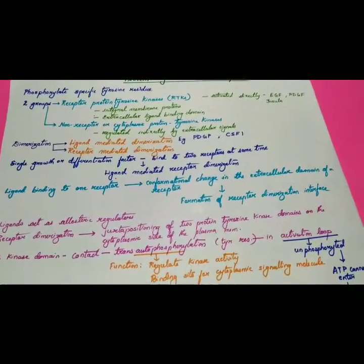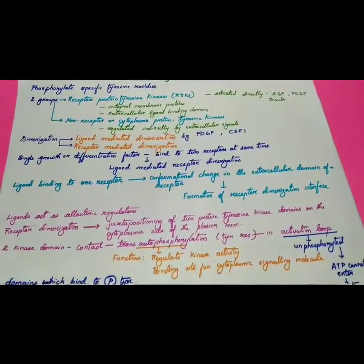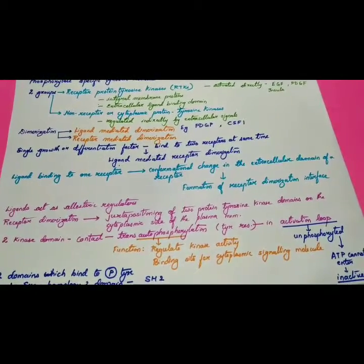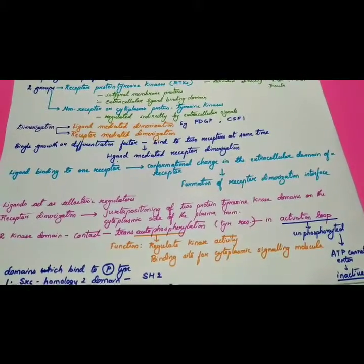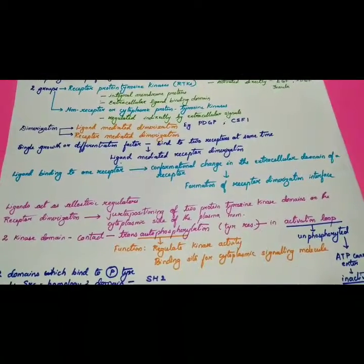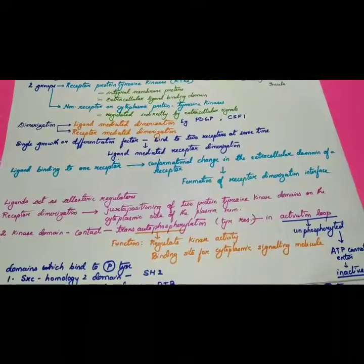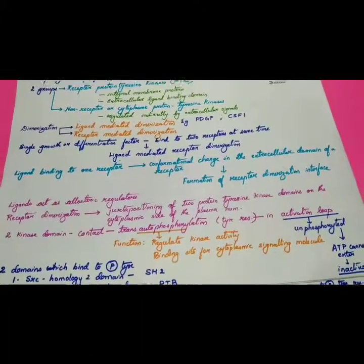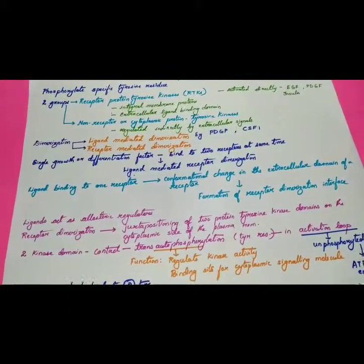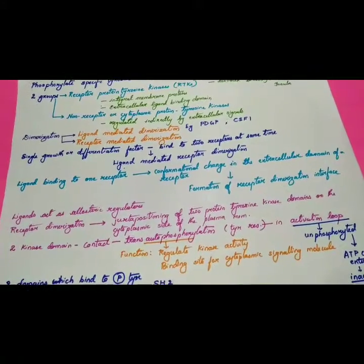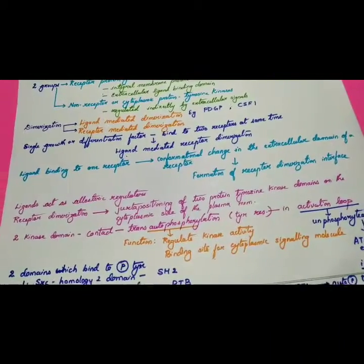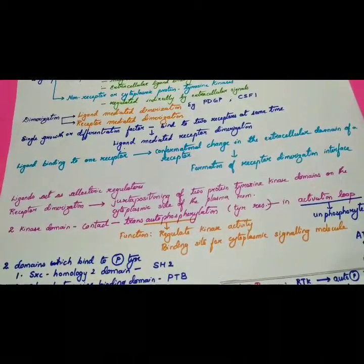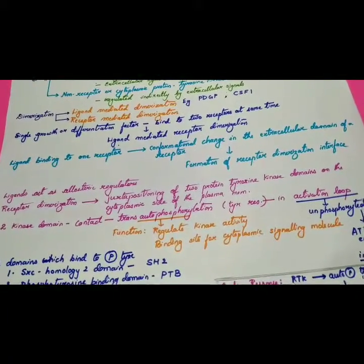RTKs function by helping in dimerization. There are two types: ligand-mediated dimerization and receptor-mediated dimerization. In ligand-mediated dimerization, the signal growth or differentiation factor binds to two receptors simultaneously, bringing them together to form a dimer.